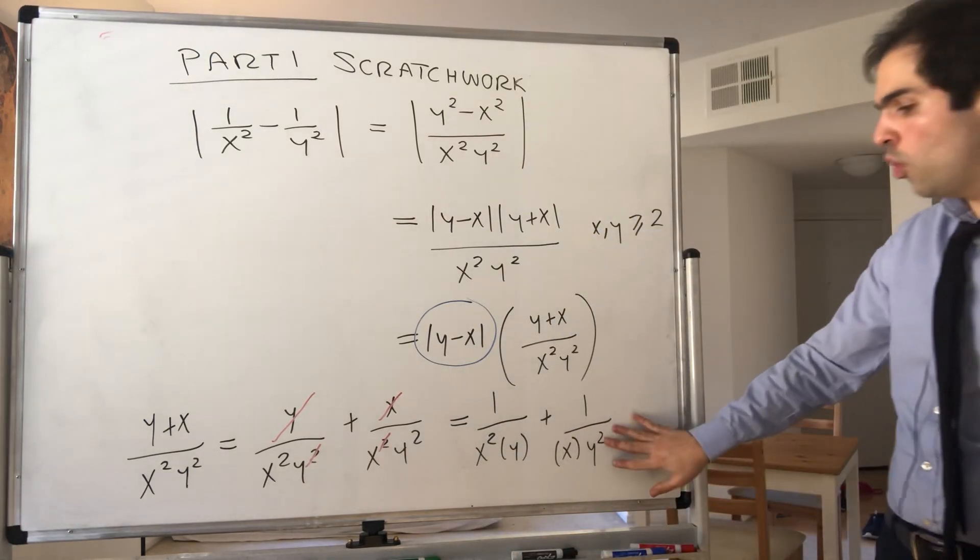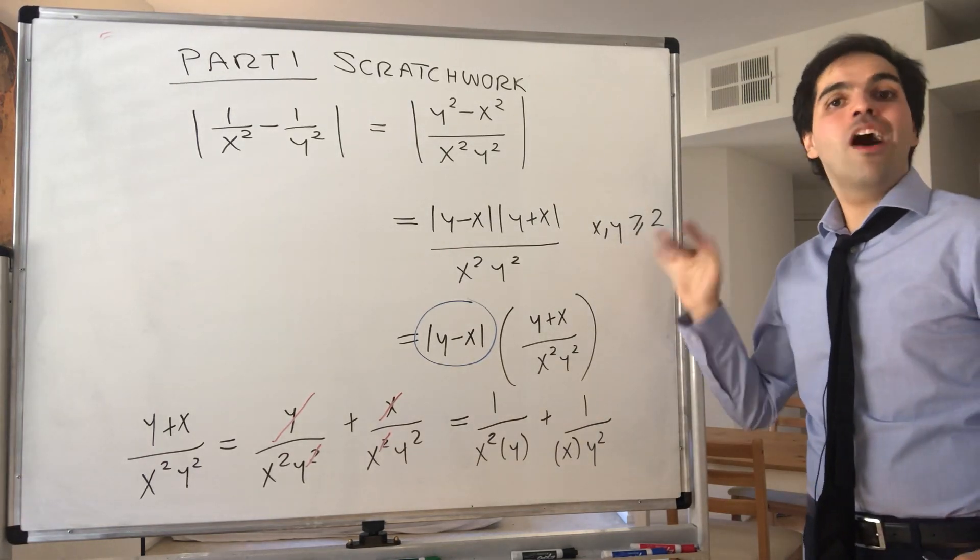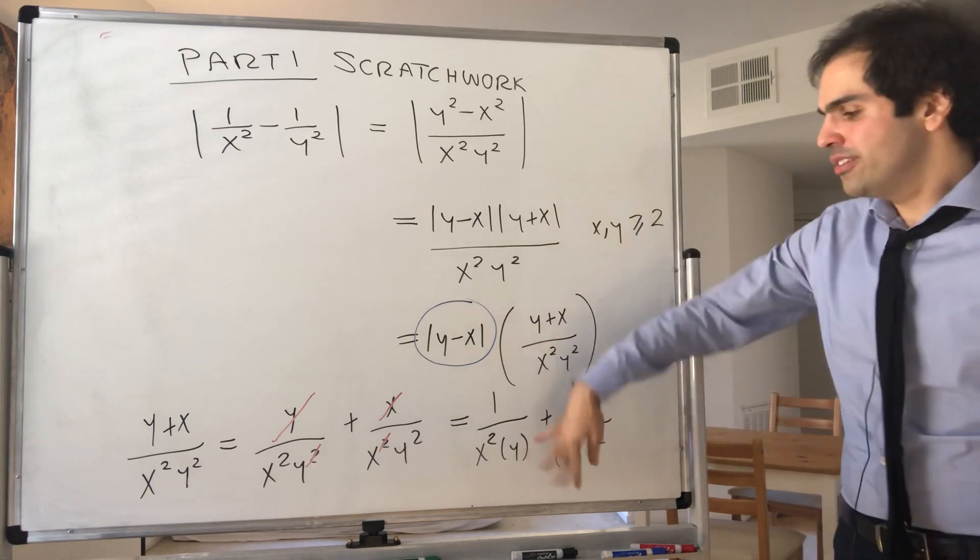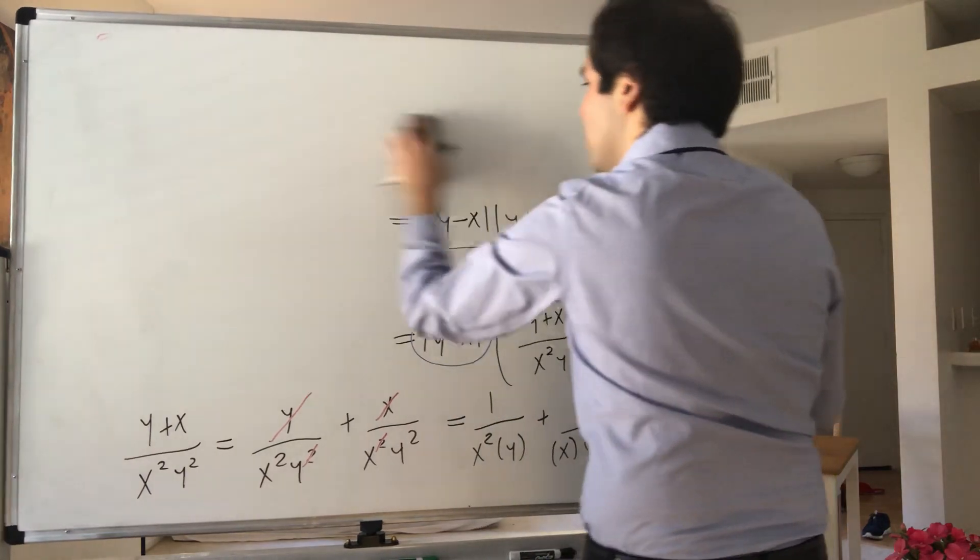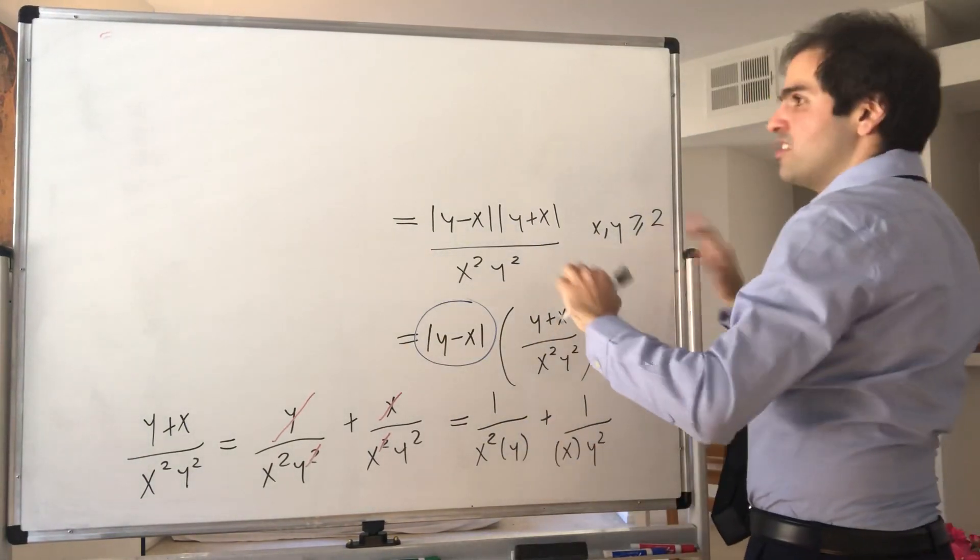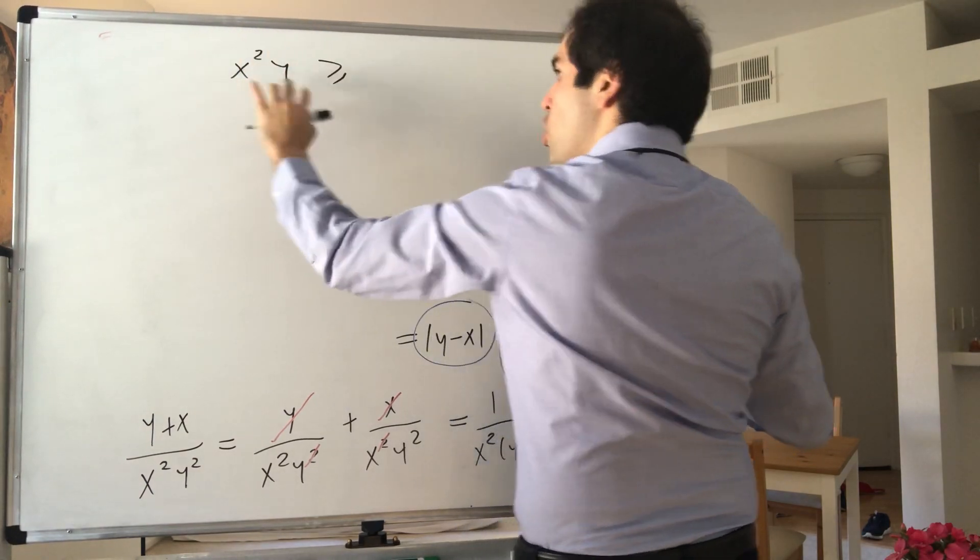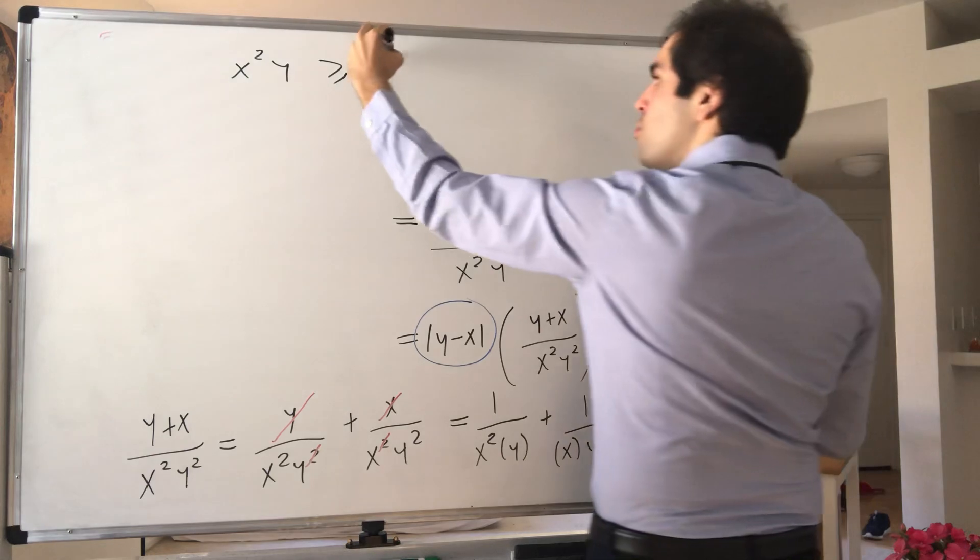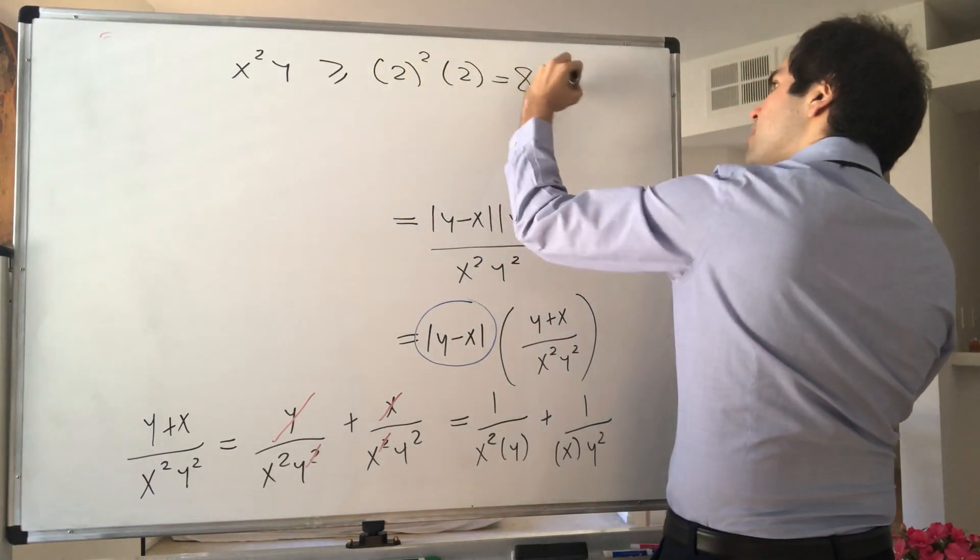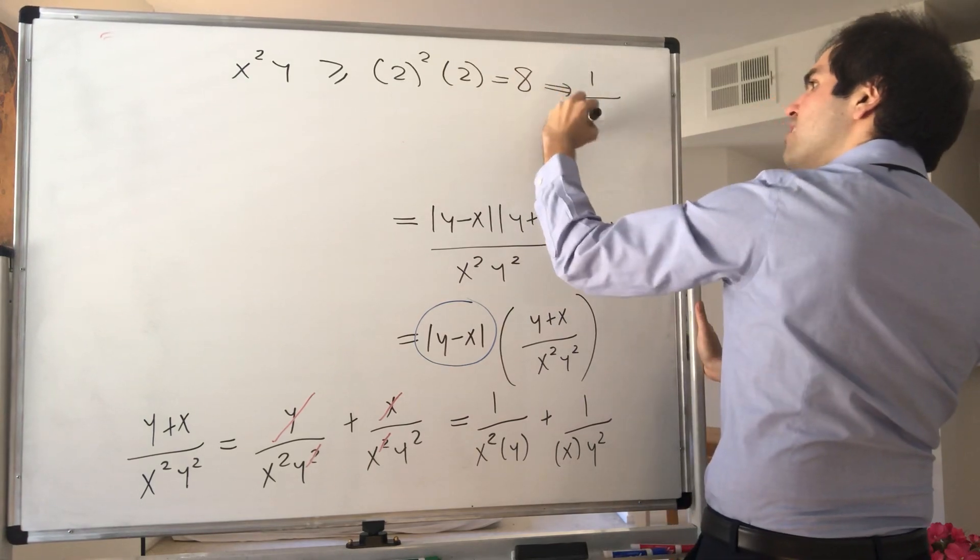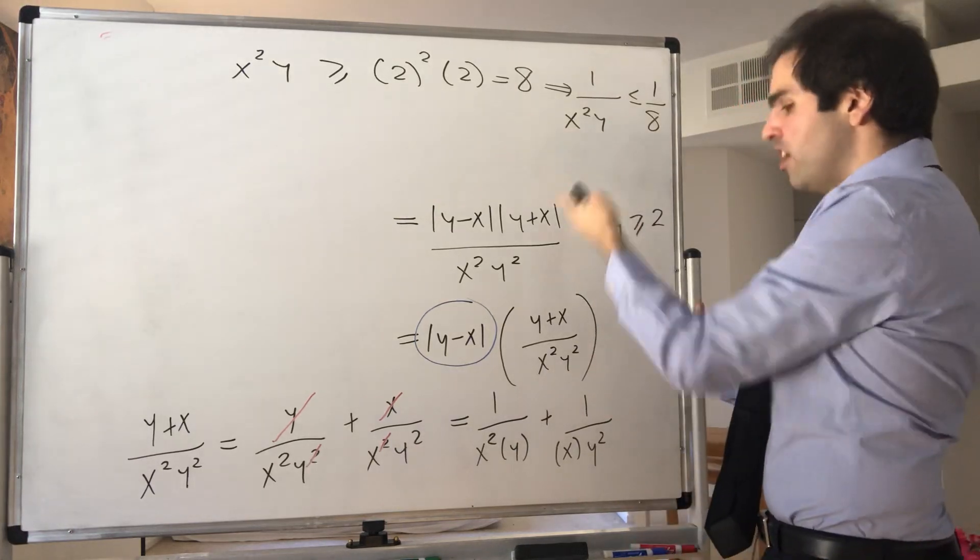And again, our goal is to make this less than something. But this is great because x and y are greater or equal to 2. So 1 over that will be less than or equal to something. In particular, x squared y, each term is greater or equal to 2. So the product will be greater or equal to 2 squared times 2, which is 8. Therefore, 1 over x squared y is less than or equal to 1 eighth.